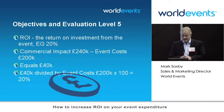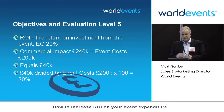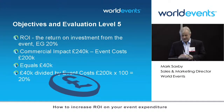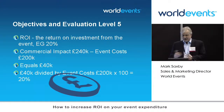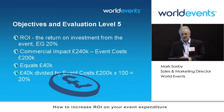The final level, level 5, is the actual ROI itself — the return on investment from the event. For example, if you set your objective to be 20%, the commercial impact resulting from phase four — isolating the event's effect from other marketing — resulted in a business uplift of £240,000. Your event costs were £200,000, giving a net benefit of £40,000. Take that £40,000, divide it by the event costs of £200,000, multiply by 100, and that gives you your 20% return on investment.